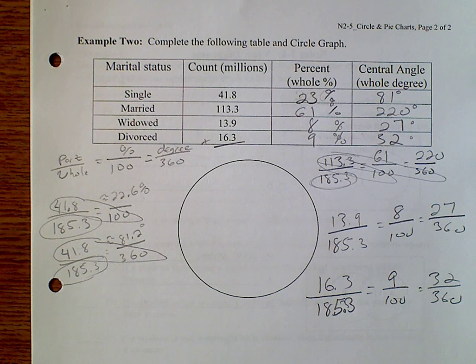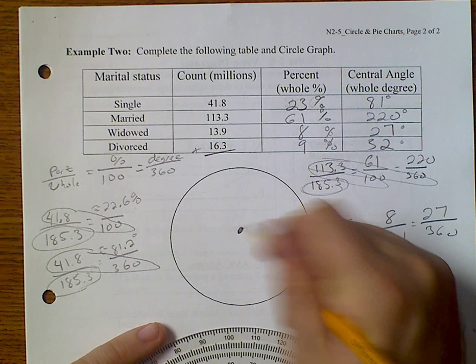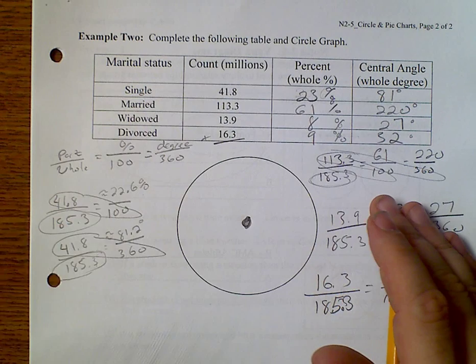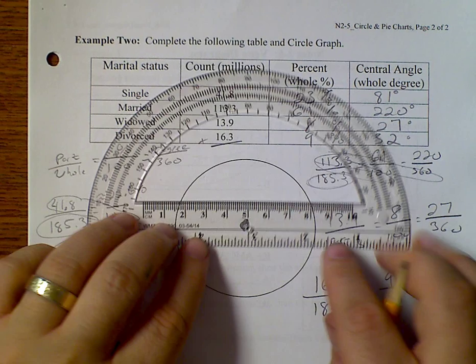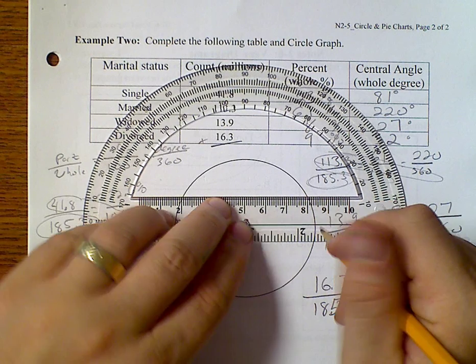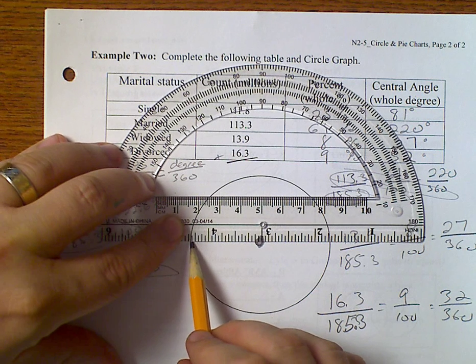And so that's how we have it. And now we need to go ahead and draw our circle graph. And if we have a protractor, it makes life a lot easier to do this. So I'm going to go ahead and pull out a protractor. We need to find the center of the circle. We'll say that that looks like the center.